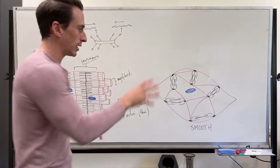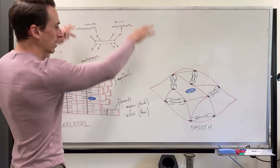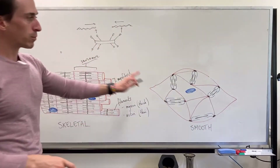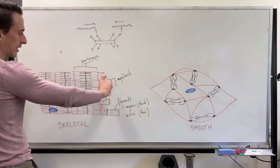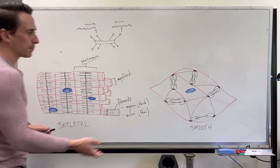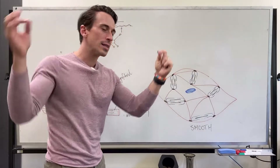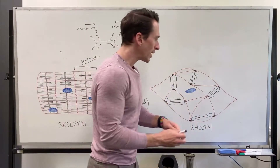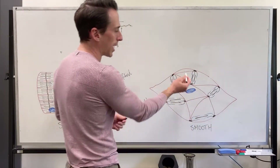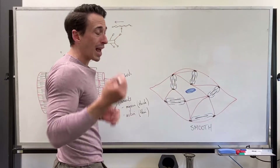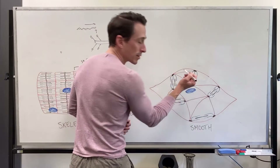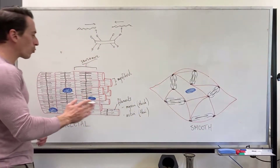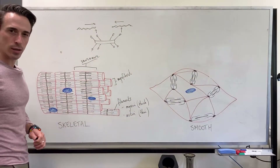Now let's compare that to smooth muscle. Smooth muscle is not shaped like a cylinder like skeletal muscle — it's shaped more like an eye, tapered on either end. It also contains filaments — myosin (thick) and actin (thin) — but they're not arranged in parallel like in skeletal muscle.